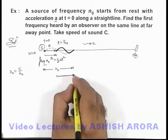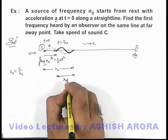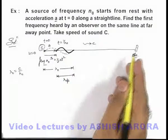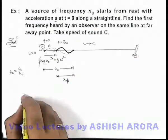So now we can write this apparent wavelength which is emitted in air from the source and which will first reach the observer can be given as...